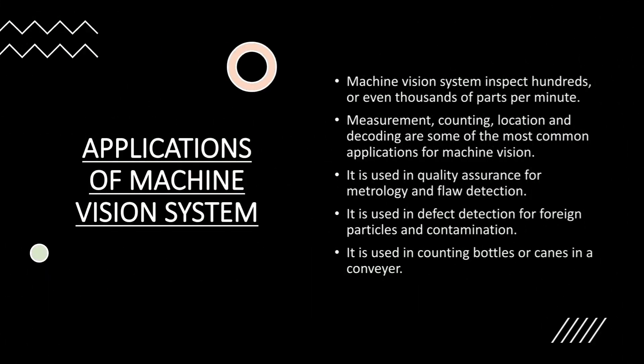Machine vision systems are used to inspect hundreds or even thousands of parts per minute. Measurement, counting, location, and decoding are some of the most common applications for machine vision.